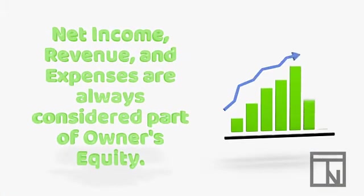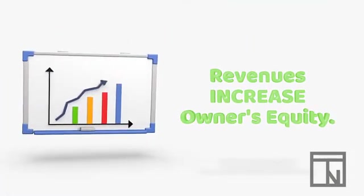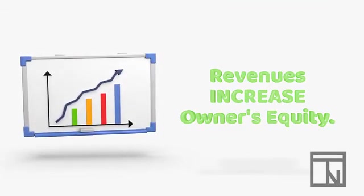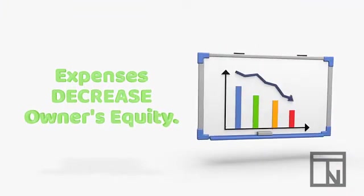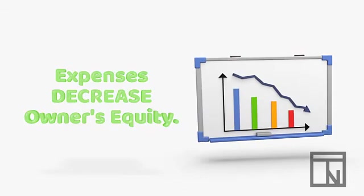The last part of owner's equity for a sole proprietorship is net income. Net income, or the excess earnings of the business, belong to the owners and are always considered part of owner's equity, as are the revenue and expense accounts that make up net income. Revenue increases the amount of money left over for the owners, so revenue increases owner's equity. Expenses decrease the amount of money left for the owners, so expenses decrease owner's equity.